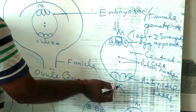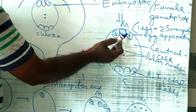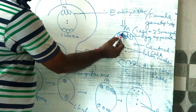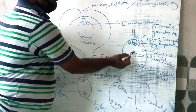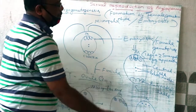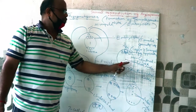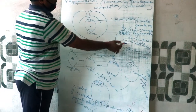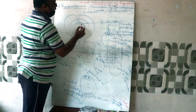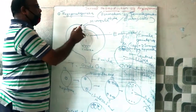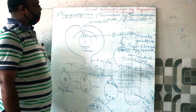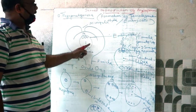Antipodal cells have no role in the fertilization process. The synergid cells play an important role in guiding the pollen tube towards the embryo sac. The egg is the female gamete, which fuses with the male gamete to form the zygote. The two polar nuclei in the central cell participate in the formation of the endosperm. The embryo sac is a haploid female plant present inside the diploid ovule.